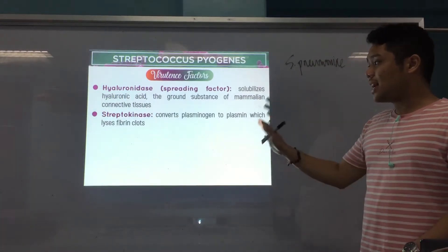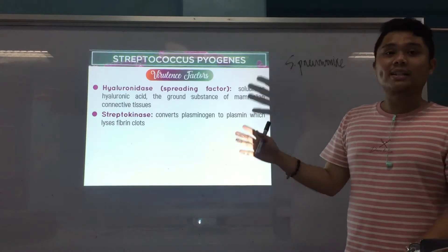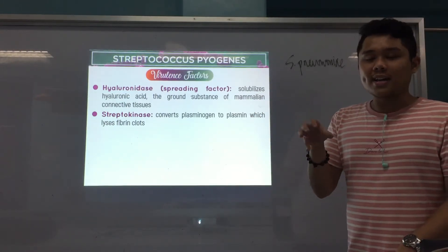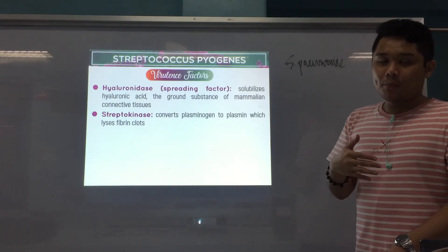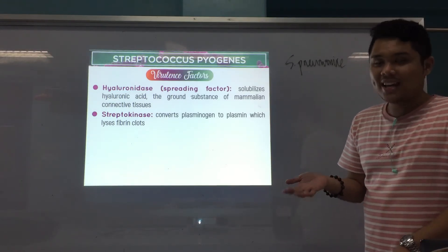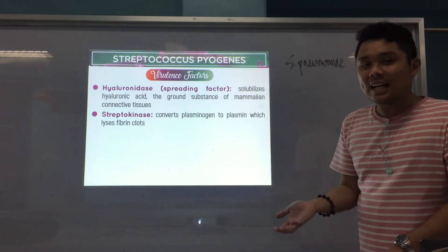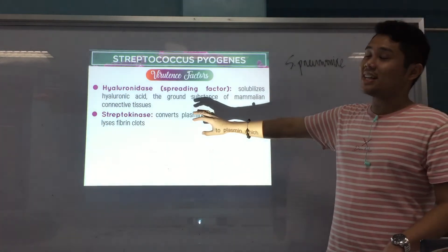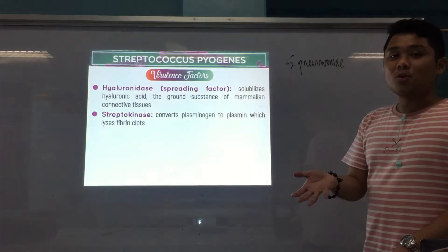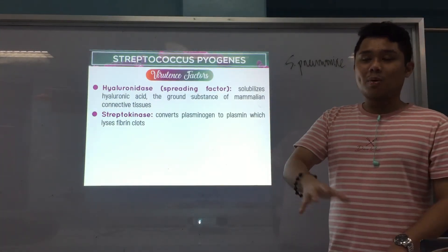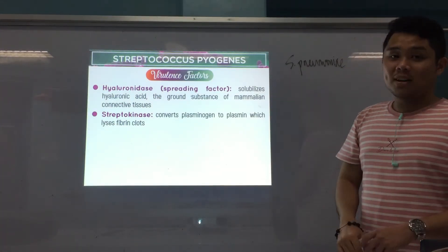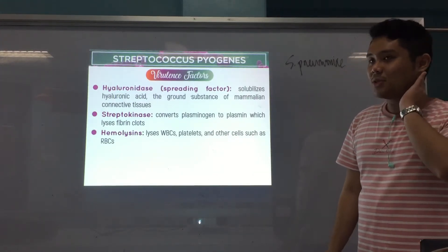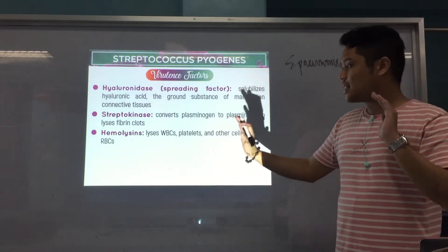Streptokinase converts plasminogen to plasmin, which lyses fibrin clots. If bacteria become trapped in clots, they cannot spread. By secreting streptokinase, the fibrin clots are lysed, allowing further spread of the organism.